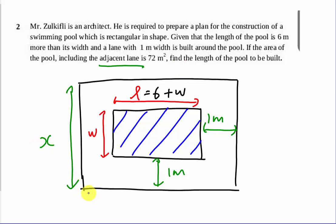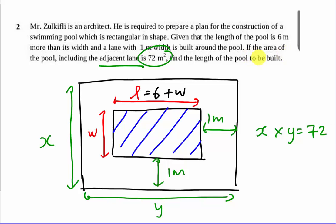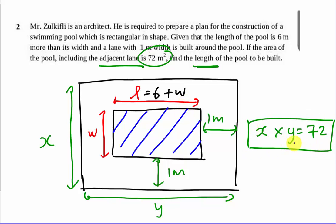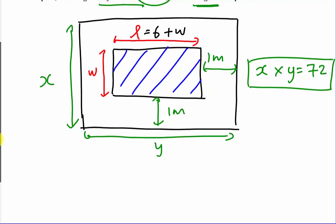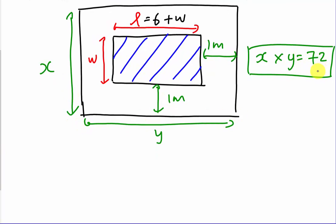So if I call the total outer dimensions x and y, then x multiplied by y equals 72, because the area of the pool including the adjacent land outside equals 72. The question wants me to find the length of the pool, so I need to form an equation and substitute values. I already have the first equation: x times y equals 72.